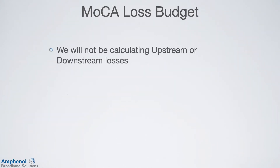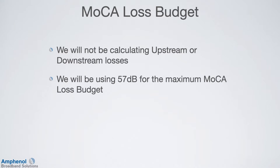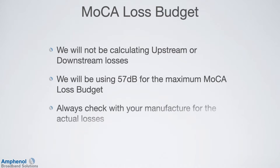In this training, we won't be calculating upstream or downstream losses. When calculating in the field, you should always do those calculations as well. We'll be using 57 dB as the maximum MOCA loss budget, which is the standard for most cable operators. I'll be using typical losses in the following examples — always check with your manufacturer for the actual losses.